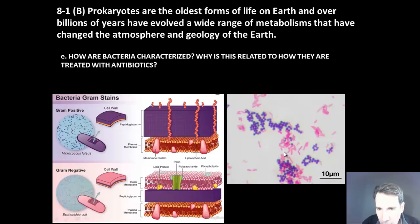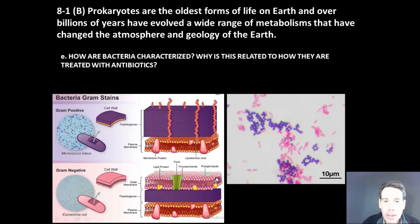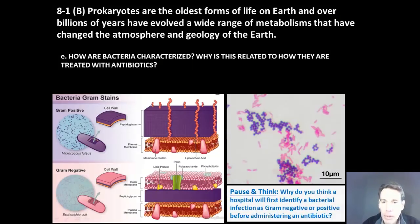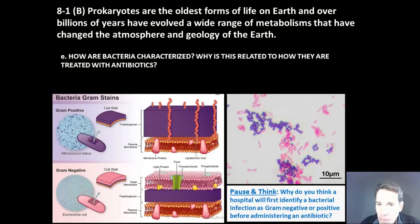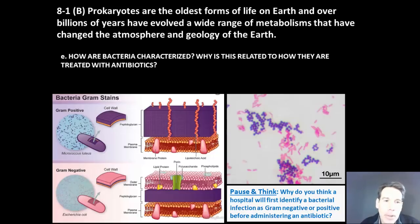These bacteria in pink have a thinner peptidoglycan cell wall, absorbing less of that purple stain. In addition to that, they have an outer membrane that hides the color slightly. So we call them gram negative because they don't absorb as much of the gram stain. But now imagine — why do you think a hospital would first identify a bacterial infection as gram negative or positive before administering an antibiotic?